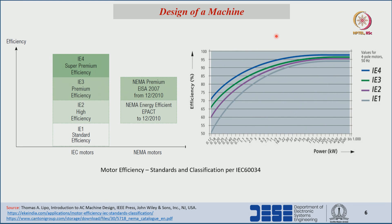If we want to design a machine to IE4 standard, the efficiency should be higher than 90% with respect to the power level. For example, for a 500 kilowatt machine, the efficiency should be greater than 95%. Similarly, for different power ratings we need to check what efficiency level and what class of motor we are designing.